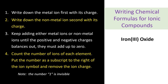Let's do another example: iron 3 oxide. Same thing — write down the metal ion first. So we write down iron, Fe. The charge is given in the formula: 3+. Now write down the non-metal ion, oxygen. The charge is 2-.